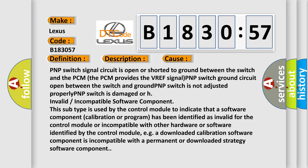Or invalid or incompatible software component. This subtype is used by the control module to indicate that a software component calibration or program has been identified as invalid for the control module or incompatible with other hardware or software identified by the control module, for example, a downloaded calibration software component is incompatible with a permanent or downloaded strategy software component.